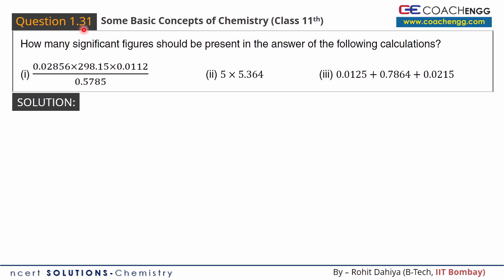Hello friends. I will now discuss question number 31 of the chapter 'Some Basic Concepts of Chemistry' — how many significant figures should be present in the answer of the following calculations? Here we have some simple calculations and we need to apply significant figure rules to find the answer.